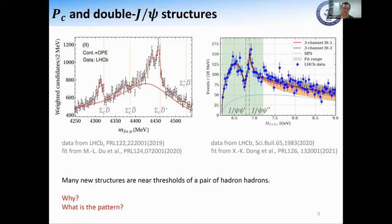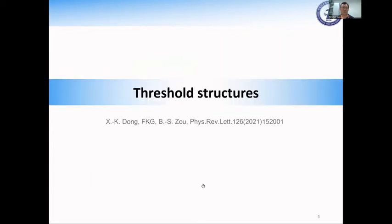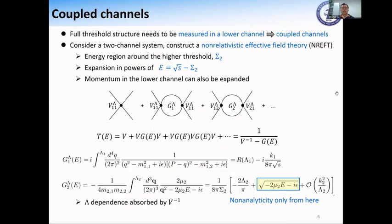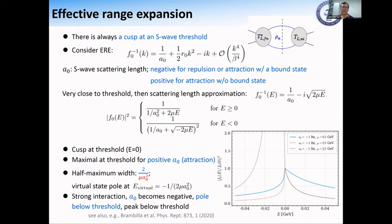The question is: why are these thresholds so important in understanding this spectrum? What is the pattern? Where should we expect a near-threshold structure to exist, and where should we not expect such a structure? We want to answer these questions. The starting point is a very well-known effect: at any S-wave threshold, there must always be a cusp. This is just a requirement of unitarity. But for higher partial waves, because of the momentum factor in front of the amplitude, the threshold behavior will be smoothed away.